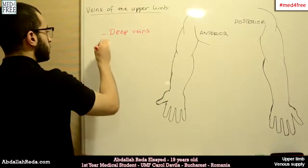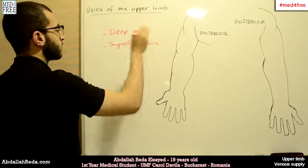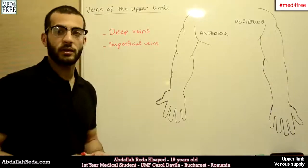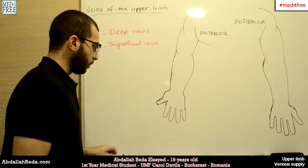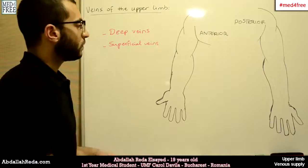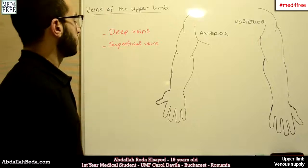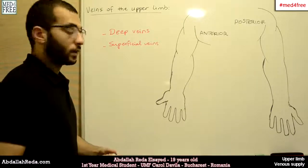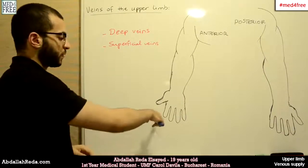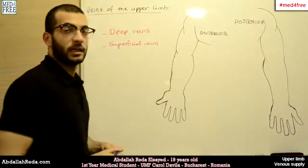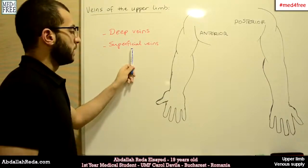We have another group of veins which is superficial. These superficial veins are called so because they are subcutaneous, meaning they run directly below the skin and are palpable — you can feel them by touching the skin. This group of superficial veins is wider than the deep veins, and of course all veins have valves to push blood from the peripheries toward the veins they drain into. We'll begin talking about the superficial veins.